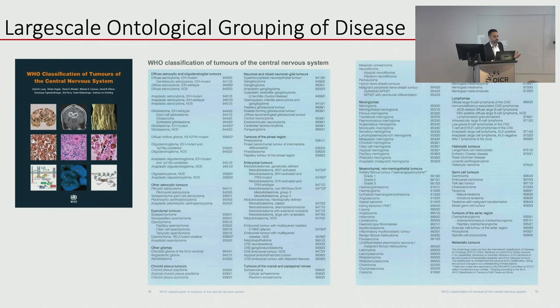We consulted the WHO World Health Organization Classification Guide — our Holy Bible for brain tumors. Tumors are listed in chapters based on understood biology: experts from all over the world decided which tumors belong together, so you have a chapter on gliomas and a chapter on meningiomas because they share similar biology, with different subtypes grouped accordingly.